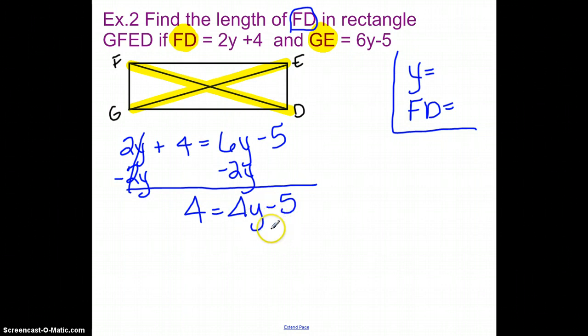So it's 4 equals 4y minus 5. And then on this one, I'm going to have to add 5. And I can already tell just by looking, I know this is not going to come out evenly. So 9 equals 4y. Divide both sides by 4.